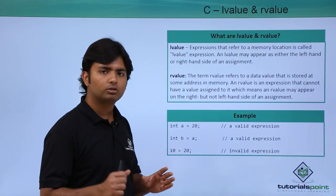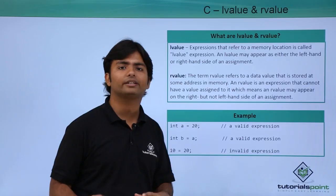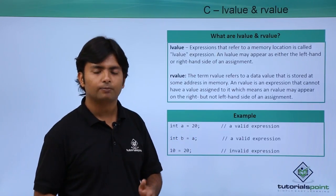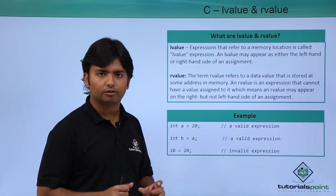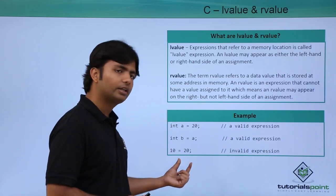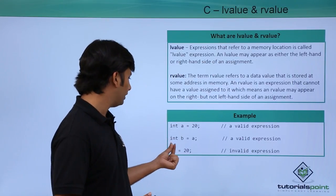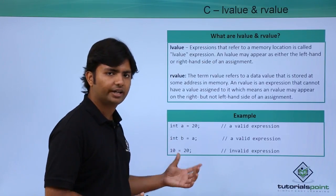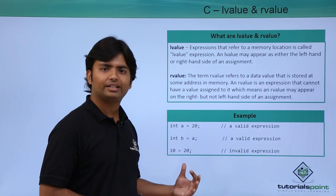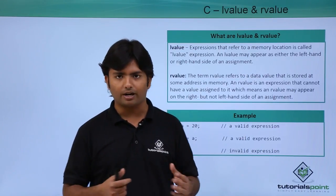If you are defining a constant, you can have the name of the constant on the left-hand side, but that is the only exception. After the constant is defined, even in the next line you cannot place the constant identifier on the left-hand side. As you can see, 10 and 20 are both constant figures, so placing a constant on the left-hand side will give you an error: l-value required. The left-hand side must be a variable only.